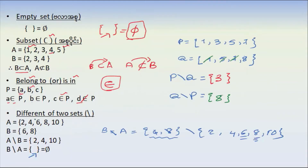We have different sets: a different set, an infinite set, an empty set, a subset — sets that belong to different or two sets.